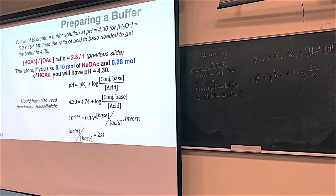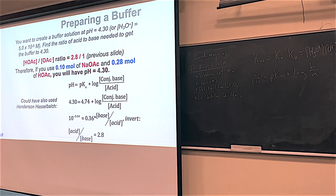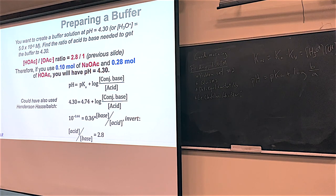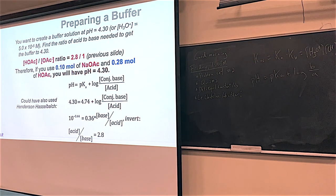You can also do this with Henderson-Hasselbalch. pH = pKa + log(base/acid). pH = 4.30, pKa = 4.74. So 4.30 − 4.74 = −0.44; 10 to the −0.44 gives base/acid = 0.36. Because we want acid over base, 1/0.36 = 2.8. So either way — double ICE or HH — you get the same 2.8 to 1 acid-to-base ratio. Note: there's a small typo on the slide — it should say 0.36 equals base over acid.